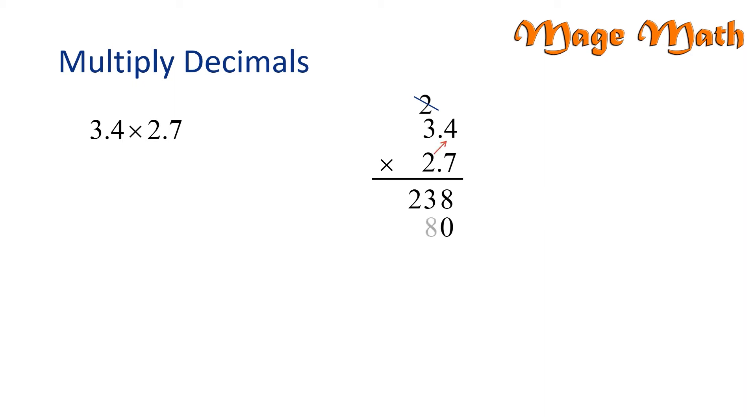2 times 4 is 8 and 2 times 3 is 6. Our next step, we're going to draw a line and add. 8 plus 0 is 8. 3 plus 8 is 11. We need to carry the 1. 1 plus 2 plus 6 is 9.